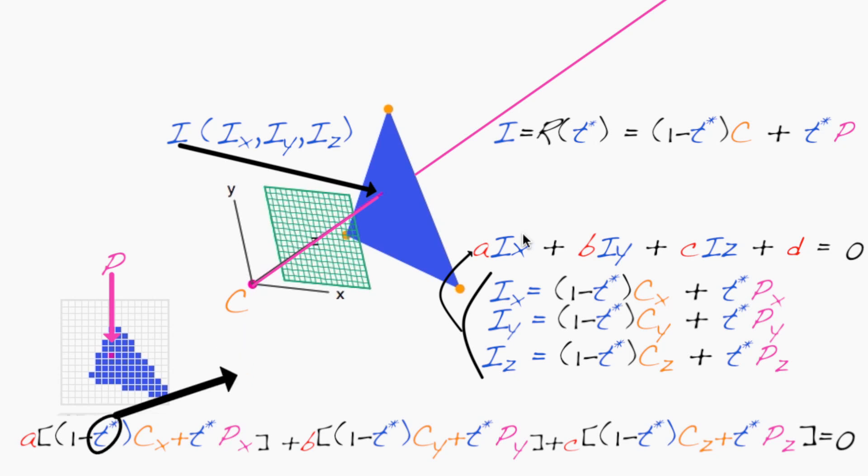Solve this for t*, then substitute back into the ray equations to get Ix, Iy, and Iz.